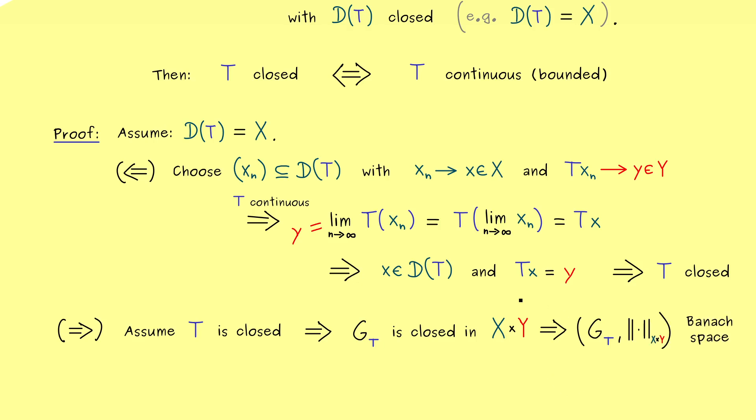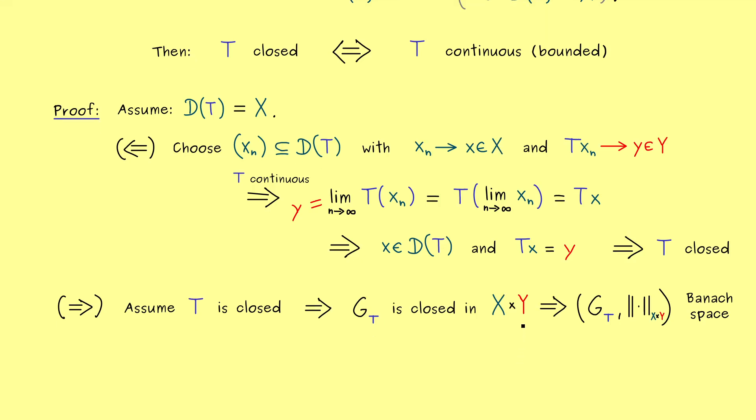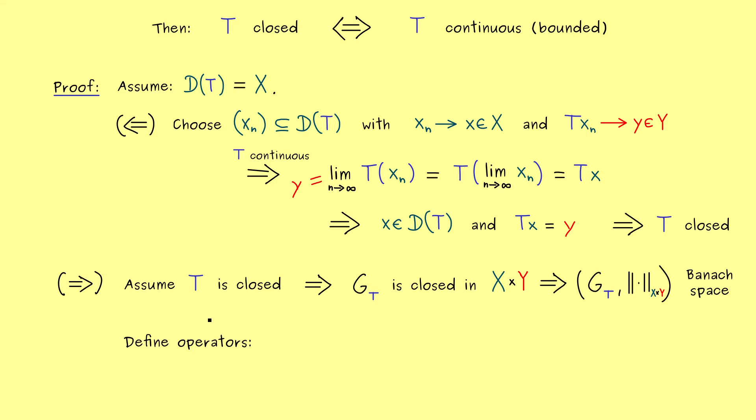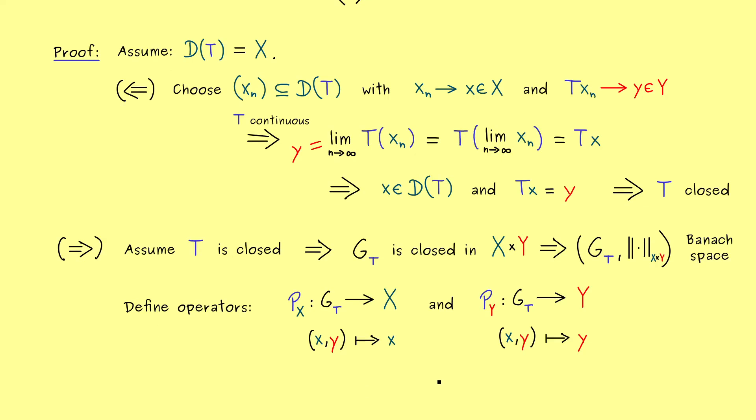And you might already know which operators we will define here since we want restrictions to the space X and the space Y. In other words, we will define projection operators. And therefore I would say a good name is P_X and P_Y. Both should have the Banach space G_T as their domain, and then they should map to X and Y respectively. And now you can already guess what the two operators should do. If you take a pair from G_T, they should map it to the first component or the second component. In other words, both operators are really simple in the definition. In fact, it is not hard to see that both definitions give us linear maps and they are also both bounded operators.